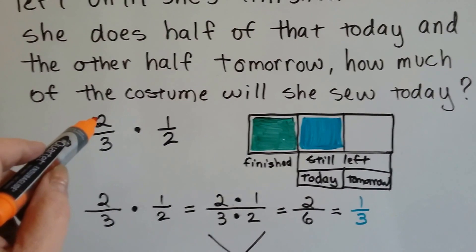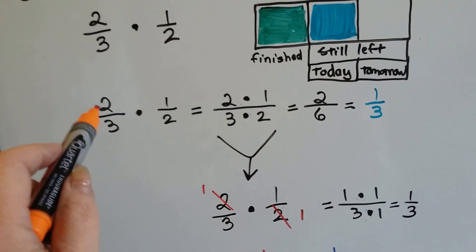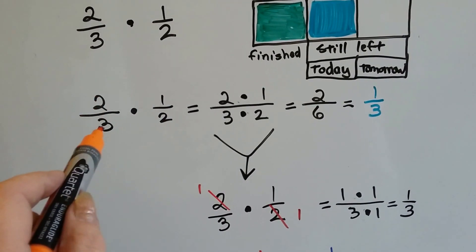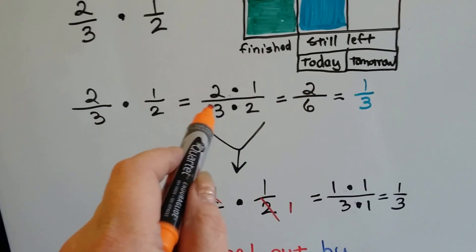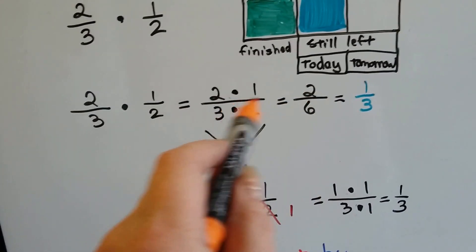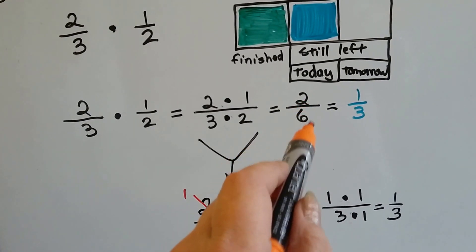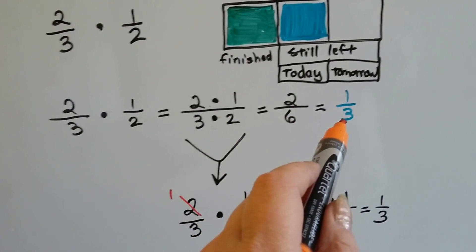We actually can do two-thirds times a half. What we're doing is we're multiplying the two times the one numerator and the three times the two denominator. Two times one is two, and three times two is six. We get two-sixths. These can both be divided by two to reduce it to lowest terms, and it'll come out to be one-third.